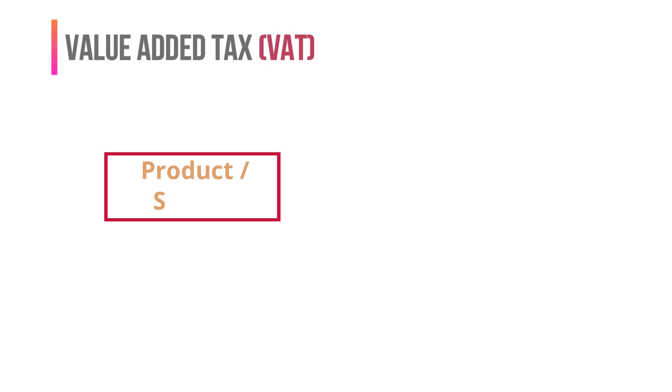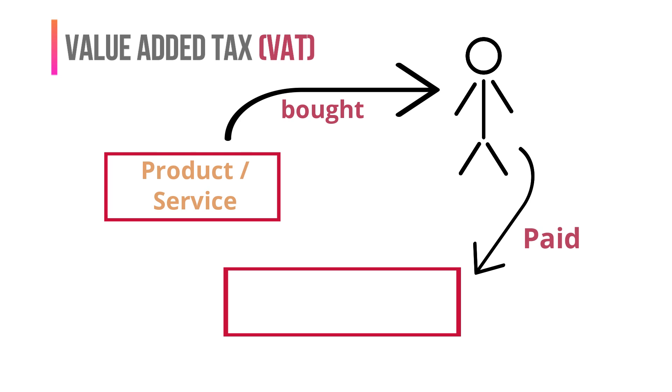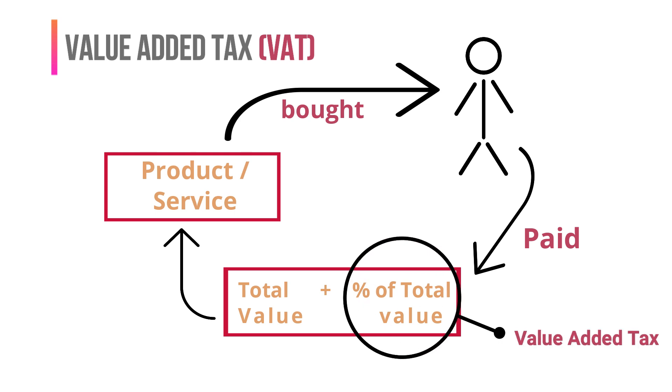The last type of tax we are going to see is value added tax, or simply VAT. When a product or a service is bought by an individual, he pays the trader or the service provider the total value of the good or service and a percentage of the total value in extra. This is called the value added tax. The trader or the service provider is bounded to pay tax to the government. It is charged from the customer as VAT.